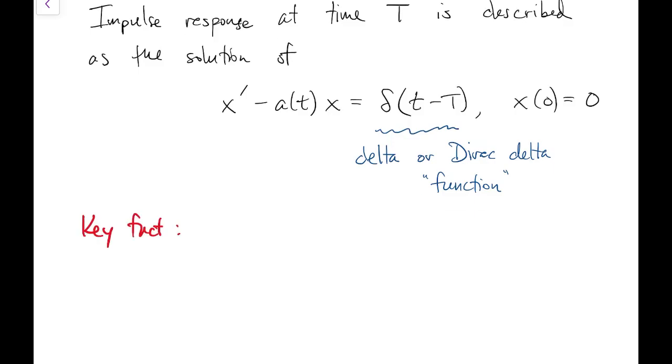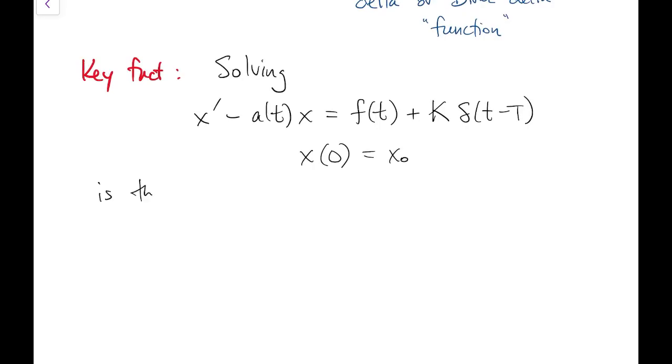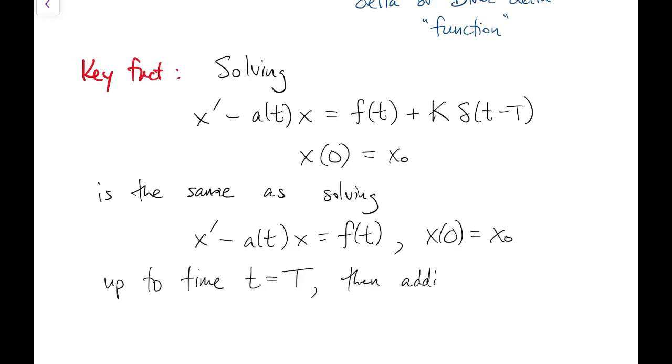The key fact for solving problems with impulse forcing is to generalize the earlier derivation. If our forcing includes k times delta of t minus T, then the solution gets an instantaneous jump of size k at time T. That's the only effect of the delta. We can use a piecewise strategy for solving the problem.